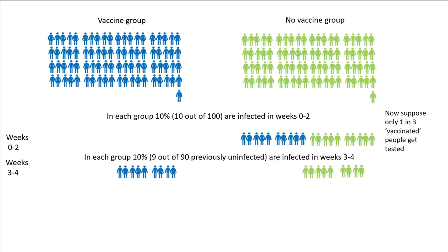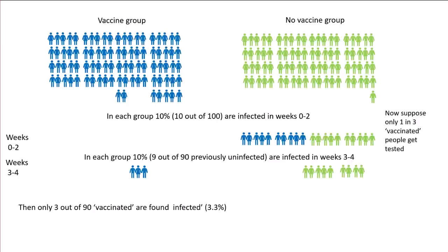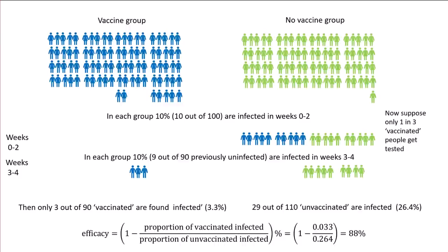So suppose only one in three of the vaccinated people get tested. That leaves us with just 3 out of the 90 classified as vaccinated found to be infected — only 3.3%. But we still have our 29 out of 110 unvaccinated who are infected, 26.4%. Now the efficacy has pushed up to 88%, even though it's simply a placebo.